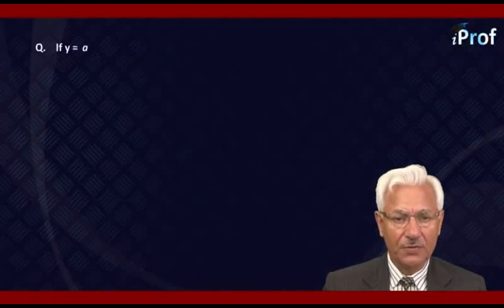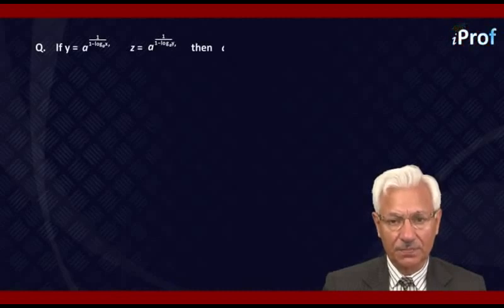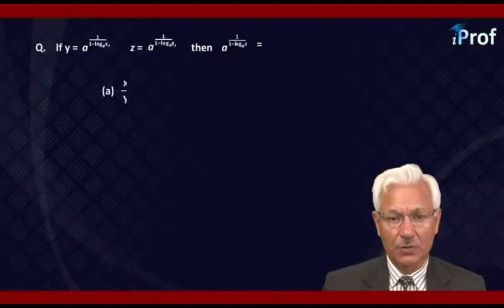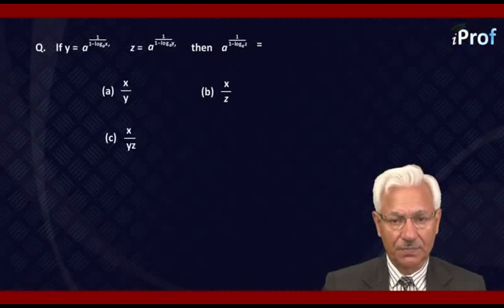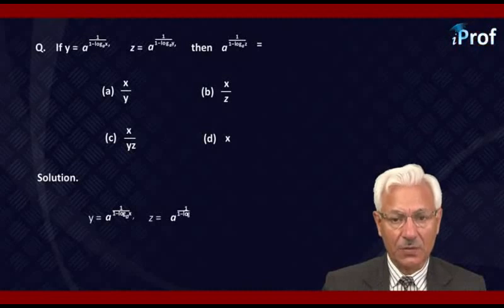If Y = A raised to the power 1/(1 − log X to the base A), and Z = A raised to the power 1/(1 − log Y to the base A), then A raised to the power 1/(1 − log Z to the base A) is equal to — options are: X/Y, X/Z, X/YZ, or X.